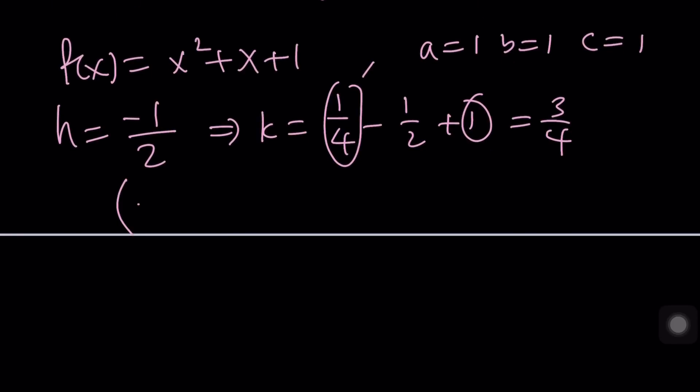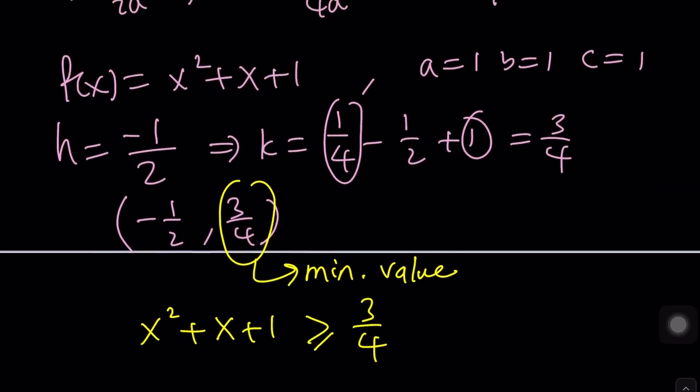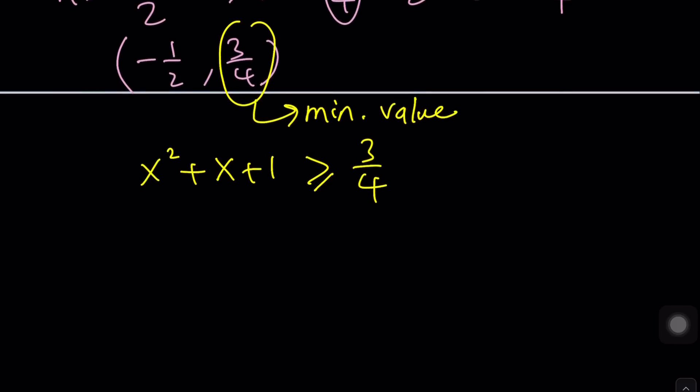So vertex is at negative 1 half comma 3 fourths. And this means that our parabola is going to take the minimum value. At negative 1 half, the minimum value is going to be 3 fourths. So in other words, the y values on the right-hand side has to be greater than or equal to 3 fourths. So this expression needs to be greater than or equal to 3 fourths because y can be 3 fourths.